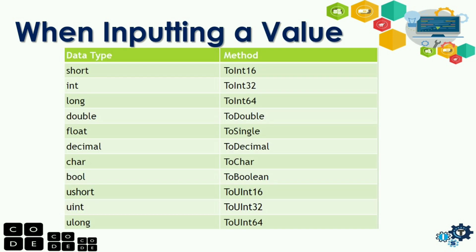When inputting a value, remember that every input in C Sharp is considered a string. So everything we enter is considered to be string data type. To convert it to integer, double, bool, or other data types, we will use a method. This method will be discussed in the next video — how to convert input into its specific data type.